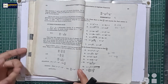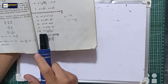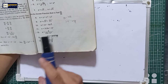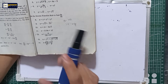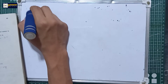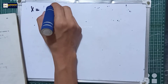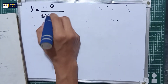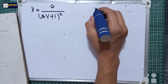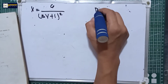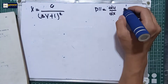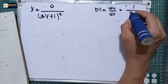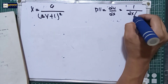Number 5, we have number 12. In number 12, x is equal to 6 all over (3y + 1) squared. Remember the formula D11: dy over dx is equal to 1 all over dx over dy.